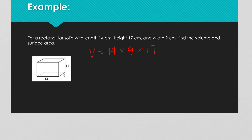So we come up with 2,142. Now remember, with volume we're dealing with cubic units. We have a little 3 up in the exponent — that's our unit of measure. That doesn't mean you take this number and multiply it times itself three times; it's our unit of measure because we have centimeters times centimeters times centimeters, which gives you cubic centimeters. So this is our final answer for the volume.